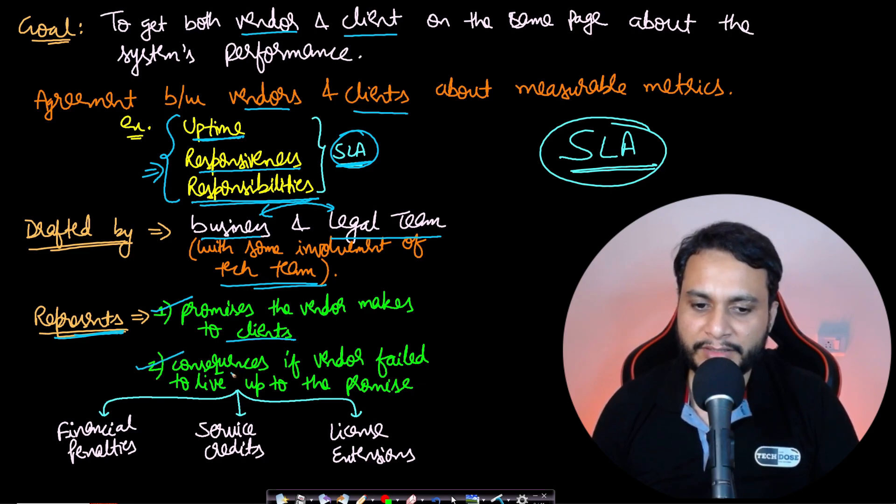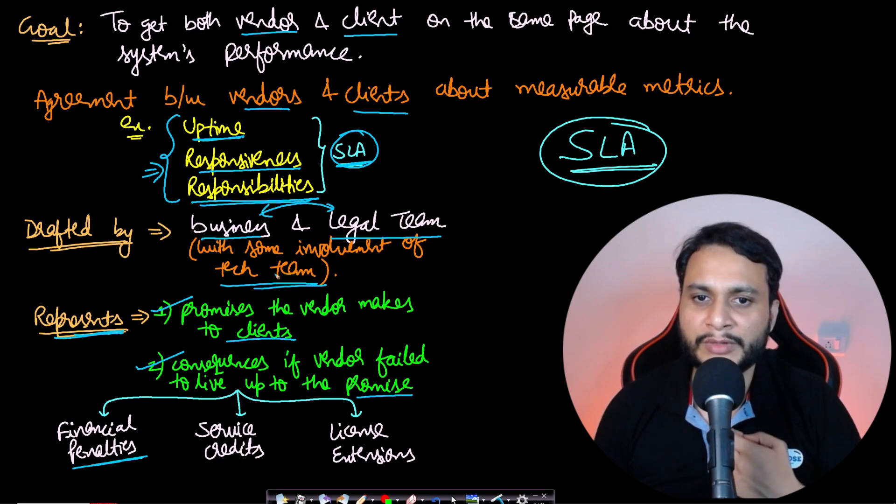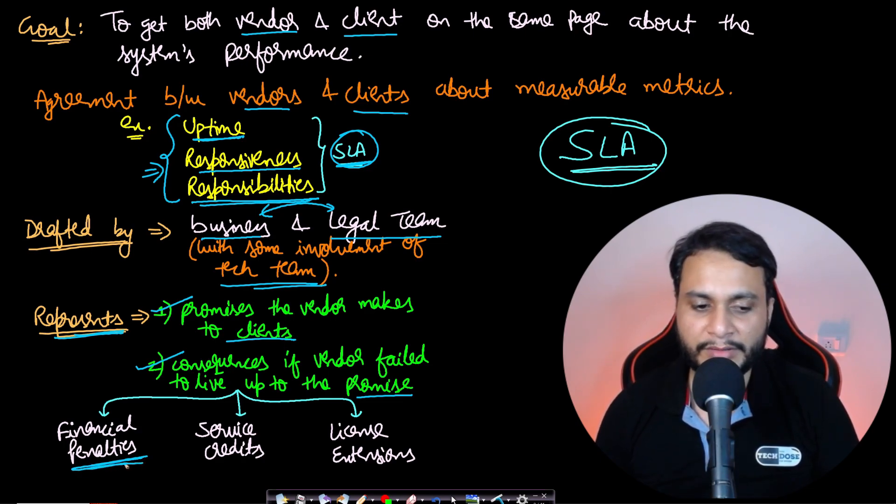What does the SLA represent? It is about the promises the vendor makes to the clients. And the second thing it mentions is the penalties - the consequences if the vendor fails to live up to the promise. What will be the financial penalty that the vendor will be paying to the client? Because the client may be losing the business - it will be a bad quality of service. So after guaranteeing, if we are not living up to our promises, then we may have to pay financial penalties. We may have to give service credits - that means you can use the service now and you can pay us later without any interest. Or we can simply increase the license extension.